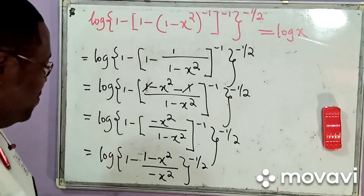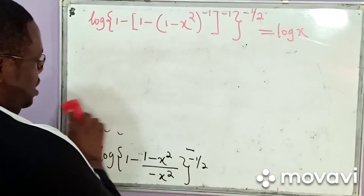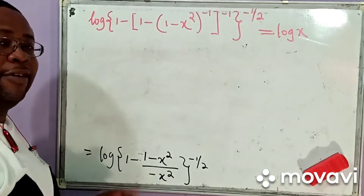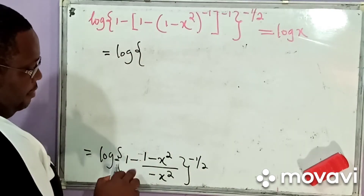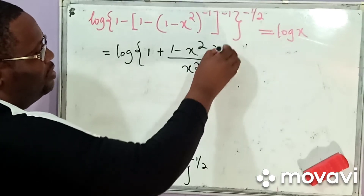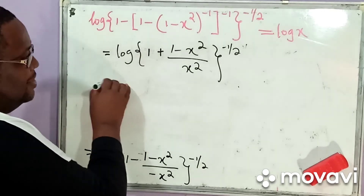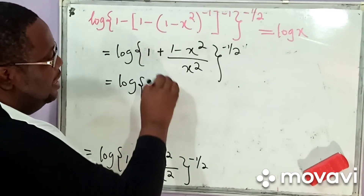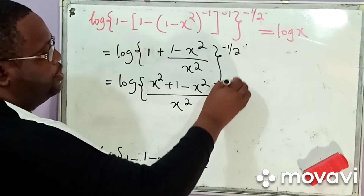So I'm going to clean up so that we can quickly round up our solution. Now, notice the negative — this is a negative and this is a negative. Minus and minus will change to a plus. So this simply becomes equal to the logarithm — opening a bracket — minus minus changes to plus: 1 plus 1 minus x squared, divided by x squared, to the power negative 1 over 2. Then we take LCM here. When you take LCM, this x squared will multiply 1 and we have a common denominator. So we simply have logarithm of x squared plus 1 minus x squared, divided by x squared, all raised to the power minus 1 over 2.